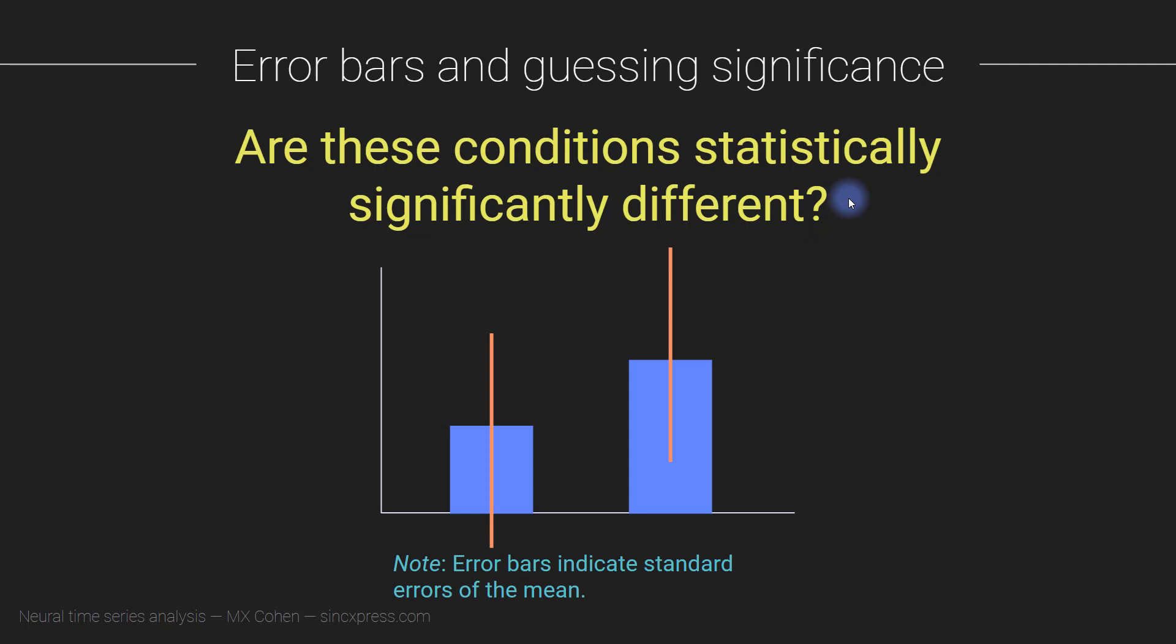Perhaps someday if you meet me, you can let me know what you first thought about this question. But now I'm just going to tell you the answer without a discussion. The answer is we have no idea from this plot, we have absolutely no idea whether these conditions are statistically significantly different. That's because what these error bars are telling us is the variance around the means, the variance over different individuals.